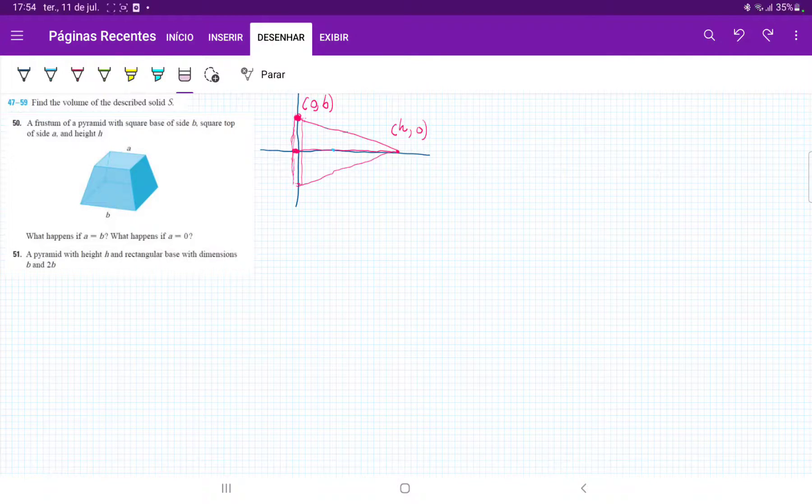Number 51, we're taking a pyramid with height h and rectangular base with dimensions b and 2b, and we want to find the volume of it.